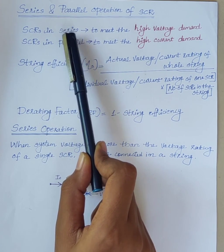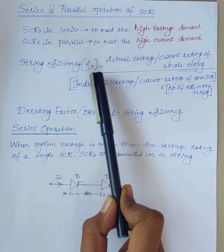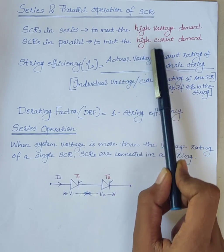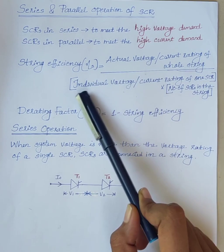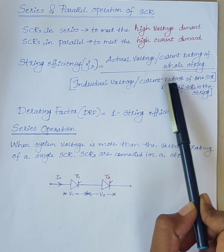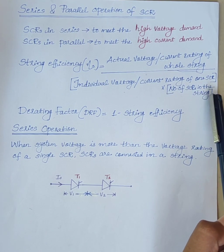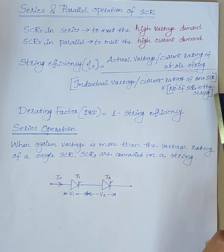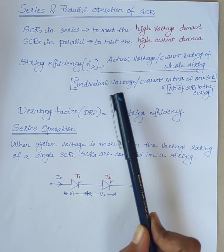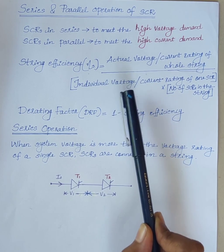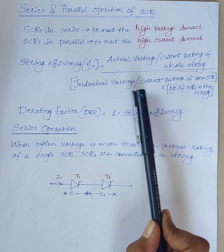In the case of series connected SCRs, string efficiency is equal to actual voltage rating of the whole string divided by individual voltage rating of one SCR multiplied by the number of SCRs in the string. With an increase in the number of SCRs in a string, the voltage or current handled by each SCR is minimized.